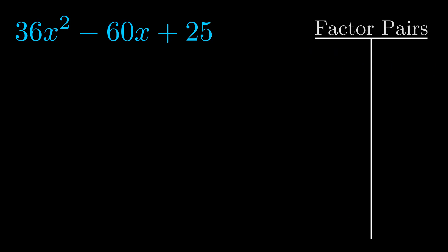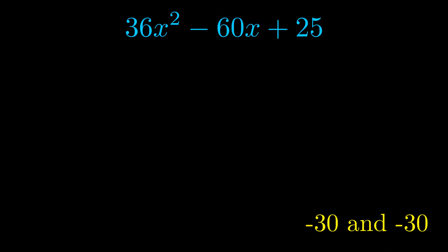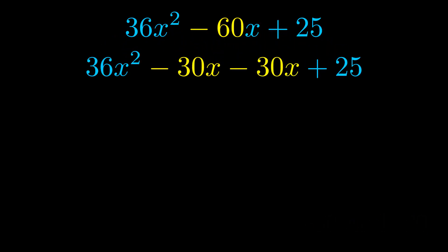Now once we have this factor pair, what we want to do is use it to split up the b value. Notice how I'm going to keep my first term and my last term completely unchanged. It is only this b term highlighted in yellow that gets expanded into this correct factor pair.